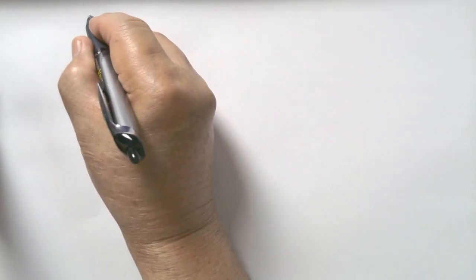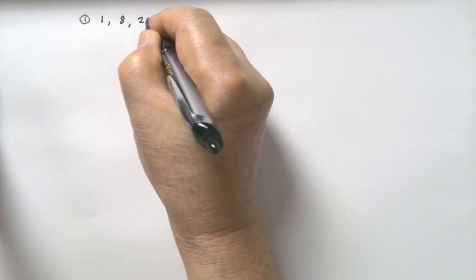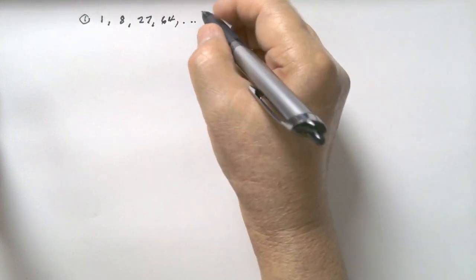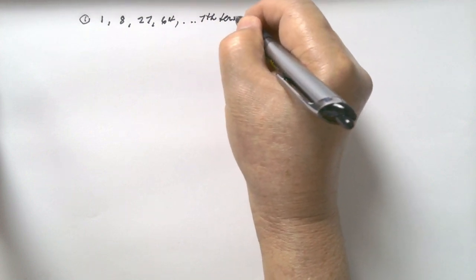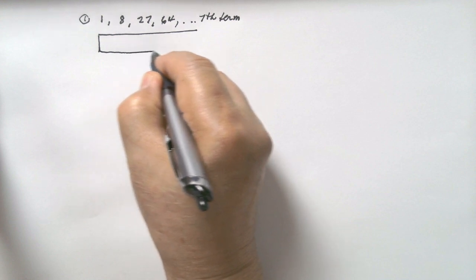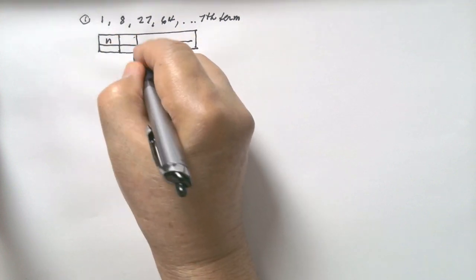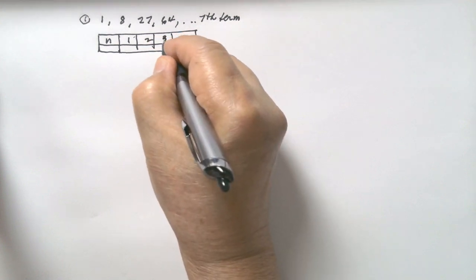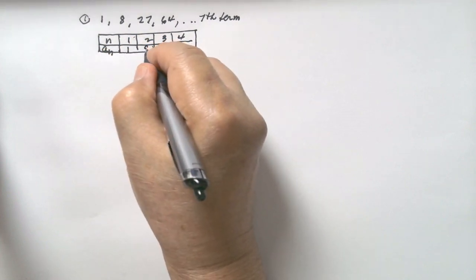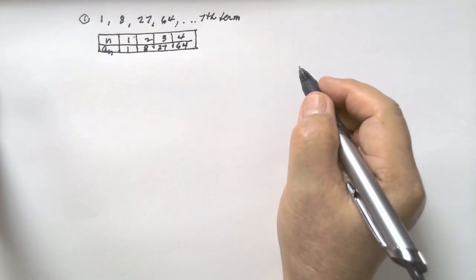Let us solve the first one. Number one: the sequence is 1, 8, 27, 64. We are asked to solve for the seventh term. Let's put this in a table. These are the positions of the terms, a sub n. The first term is 1, the second is 8, the third is 27, and then 64.